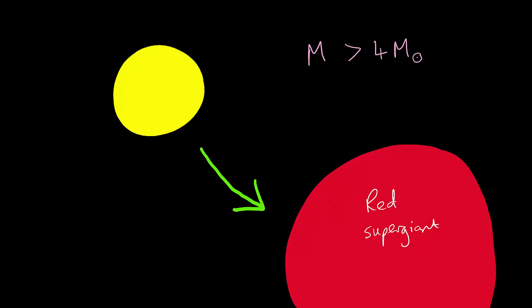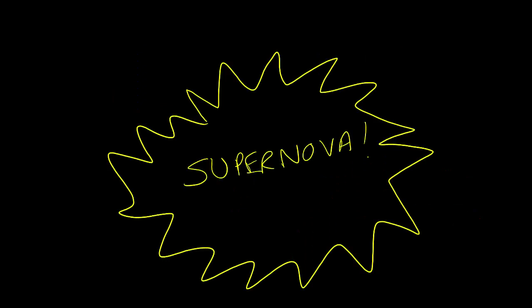When a red supergiant finally runs out of fusible material, it will also collapse. But the energy available in this collapse will be so great that even the electron degeneracy pressure of the core cannot prevent further collapse. This causes a supernova, an enormous release of energy which can briefly outshine the hundred billion other stars in the galaxy.